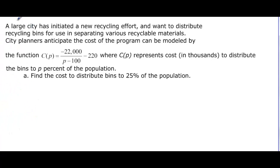So let's look at an application in this case then. A large city has initiated a new recycling effort and want to distribute recycling bins for use in separating the materials. And they want to approximate the cost by this function: negative 22,000 over P minus 100 minus 220, where C(P) is the cost in thousands of dollars to distribute the bins to P percent of the population. So we want to find the cost to distribute bins to 25 percent of the population. Well that means P is going to be 25. And in this case, it's just going to be a plug and chug.